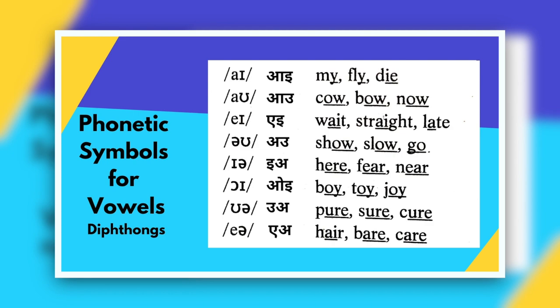Now let's discuss the diphthongs. Diphthongs are also known as gliding vowels because two vowels combine together to form them. The first diphthong is a combination of A and E, giving the sound I, as in my, fly, die. The next one is AU, as in cow, bow, now. The third one is EI — this is used most in English. We often say 'wait, straight, late,' but the correct phonetic pronunciation is 'wait, straight, late.' The next diphthong is OU, as in show, slow, go. The next one is IER, as in here, fear, near — pronounce it 'here, fear, near,' not 'here, fear, near.'